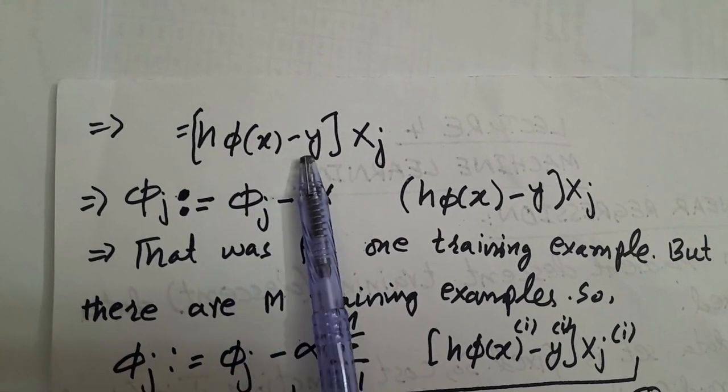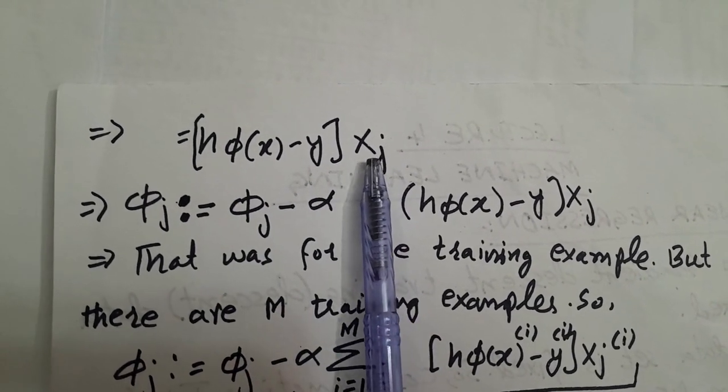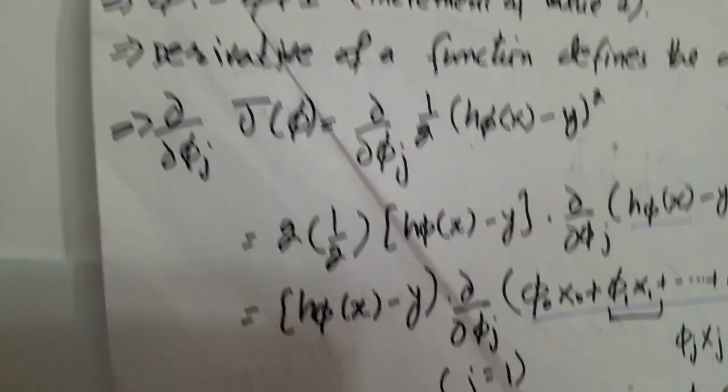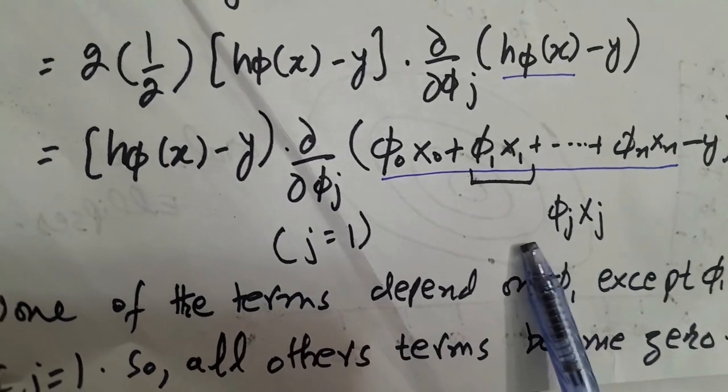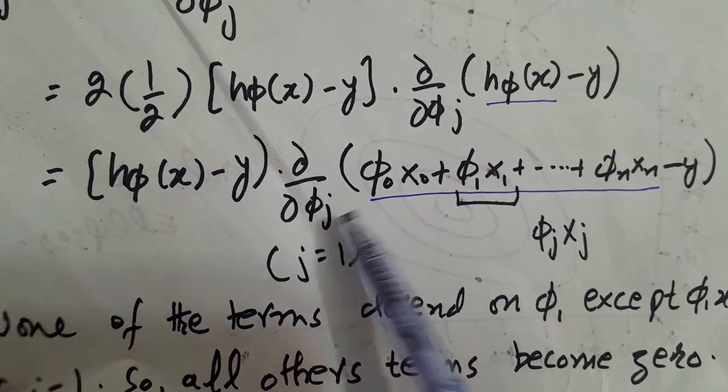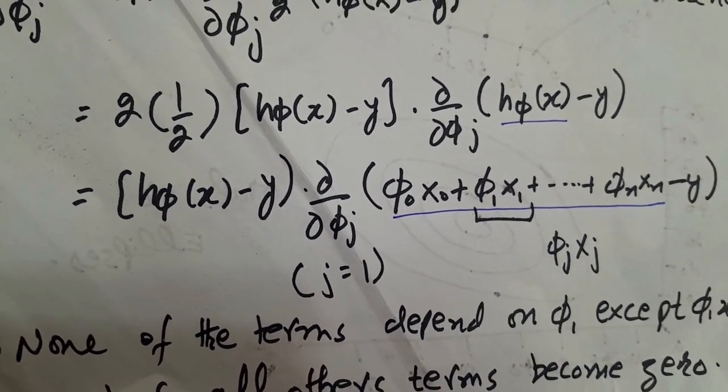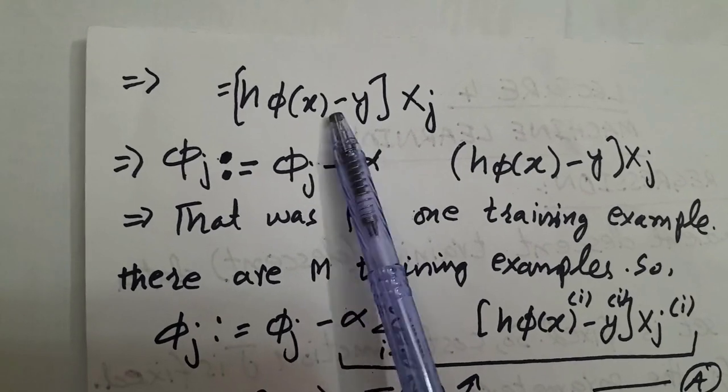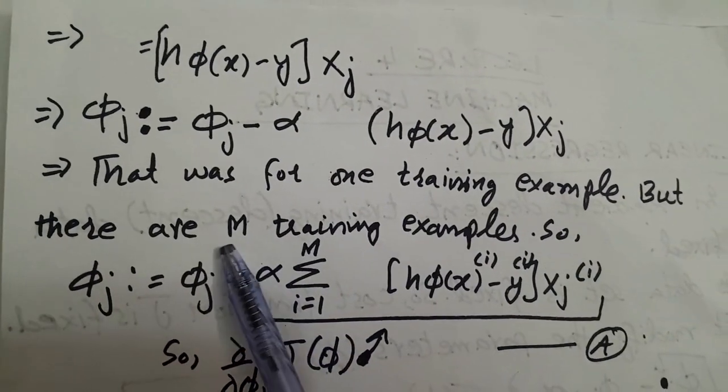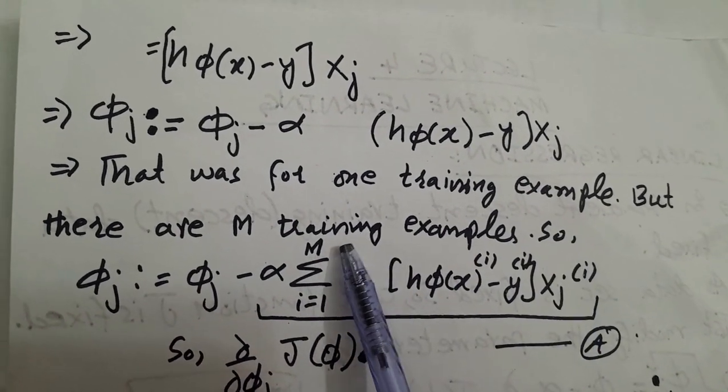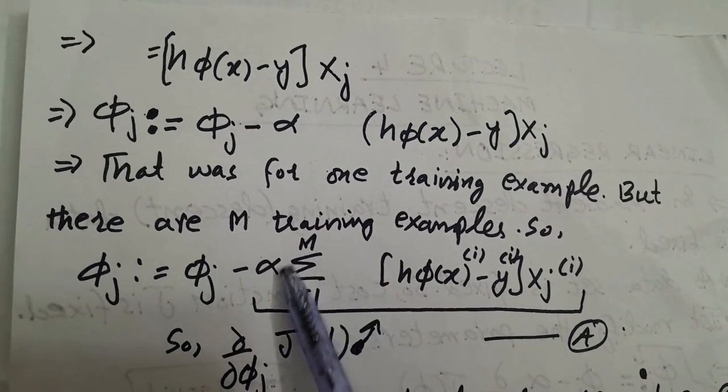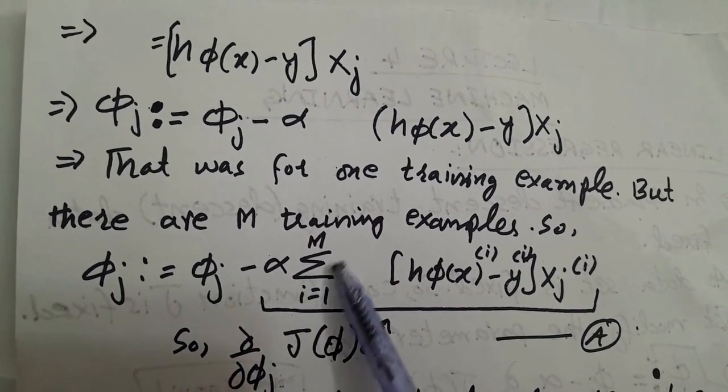Now that will be equal to x j. Previously it will become phi j x j, where phi j partial derivative will cancel out with this. Then it will become phi j minus alpha. That was for one training example, but there are m training examples. So taking summation, phi j colon is equal to with alpha, taking all the m training examples.